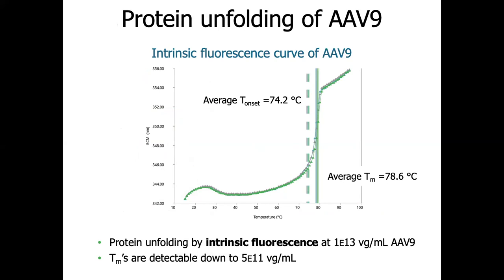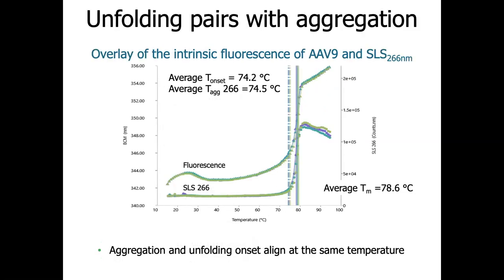This is a protein unfolding curve of AAV9 using intrinsic fluorescence. There is a TM around 78.6 degrees Celsius, which is the inflection point where the curve changes. Additionally, you can see the T onset — when there is an onset in the change of the fluorescence curve — around 74.2 degrees Celsius. The advantage of the UNCLE is being able to have aggregation information measured at the same time. The aggregation information shown by TIAG from the SLS 266 occurs at 74.5 degrees Celsius, which is at the same time as the T onset. Using this one application, you can get information about aggregation and unfolding at the same time with just 9 microliters of sample.